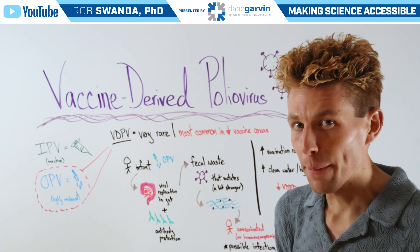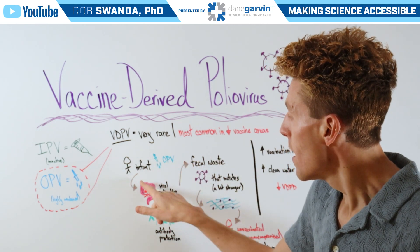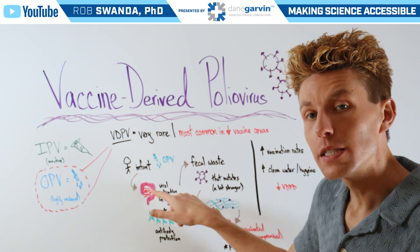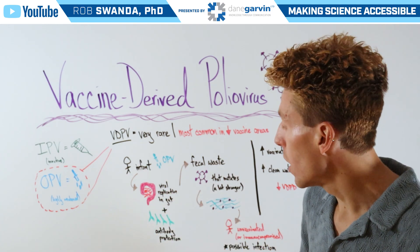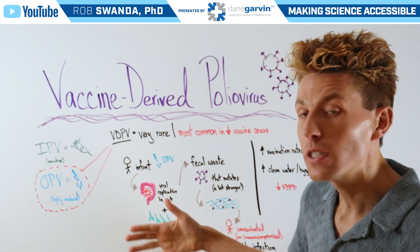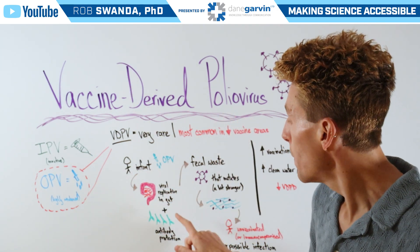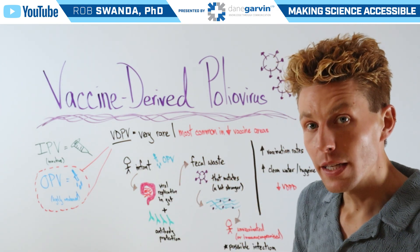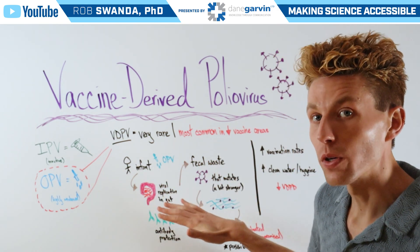The way that it happens is when an infant is vaccinated with OPV, this allows for that highly weakened form of polio virus to begin replicating in their gut. And that's what causes antibody production to occur, allowing that infant to be protected from a future polio virus infection. But when that infant excretes waste, it still includes a highly weakened form of the polio virus.